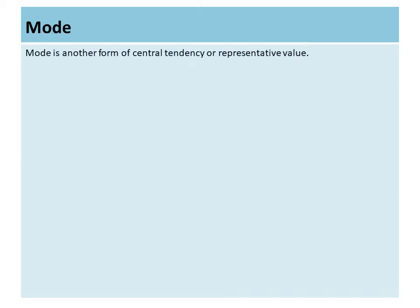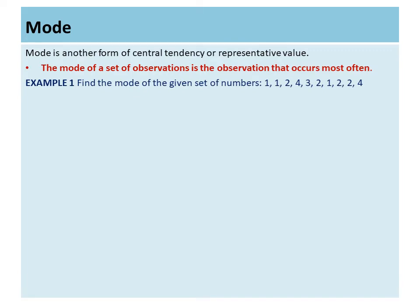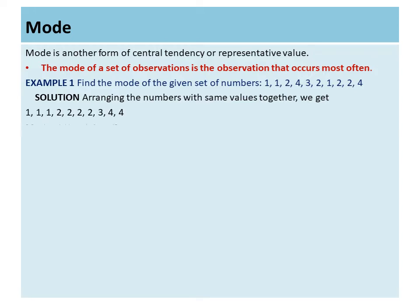Let us study what is mode of the given observation. Mode is another form of central tendency or representative value. The mode of a set of observations is the observation that occurs most often — that is, the most frequently occurring observation is called the mode. For example, to find the mode of a given set of numbers, we first arrange them in ascending order, and then we can easily find which observation occurs most often. Here, the mode of this data is two.